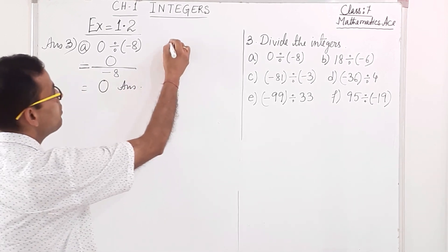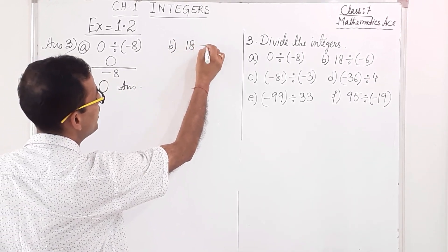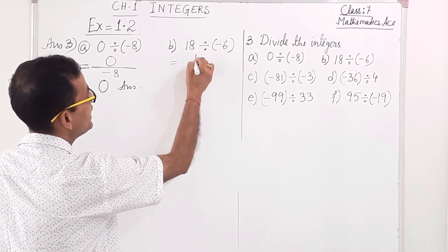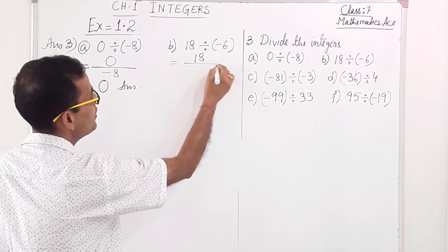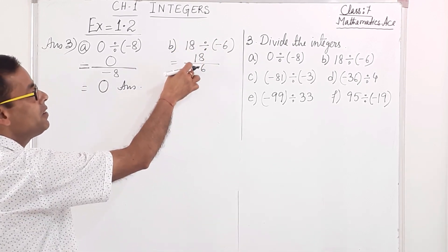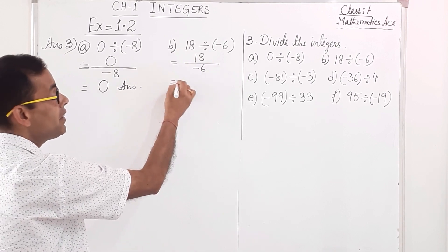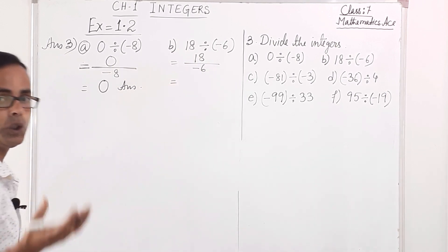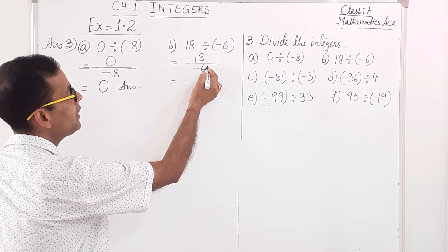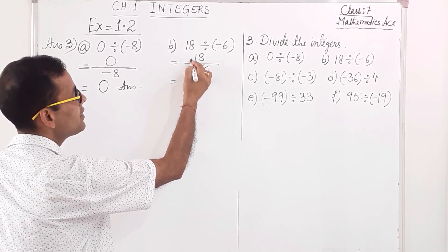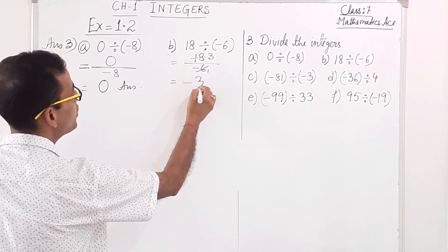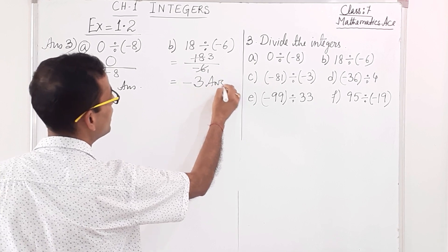Number B: 18 divided by minus 6. Writing it as 18 over minus 6 — positive divided by negative, different sign — so the quotient will be negative. 18 divided by 6 is 3. So the answer is minus 3.